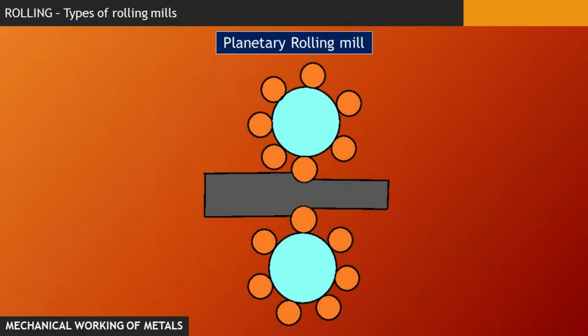And next, we have planetary rolling mill. This mill consists of a pair of heavy backing rolls, which is surrounded by a large number of small planetary rolls. The main feature of this mill is that it reduces a slab to coiled strip in a single pass.